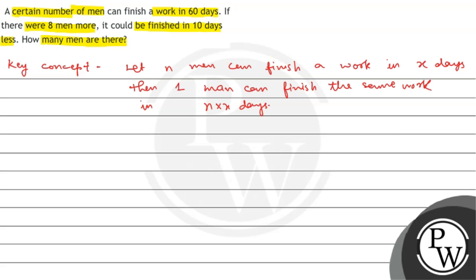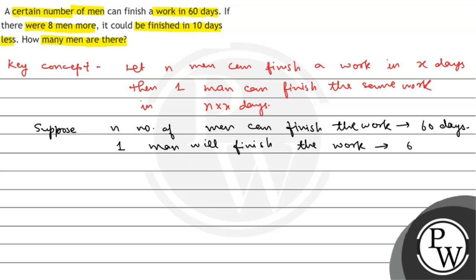So, suppose n number of men can finish the work in 60 days. Therefore, one man will finish the work in 60n days.